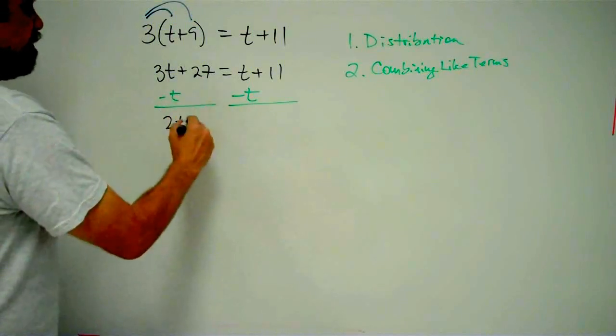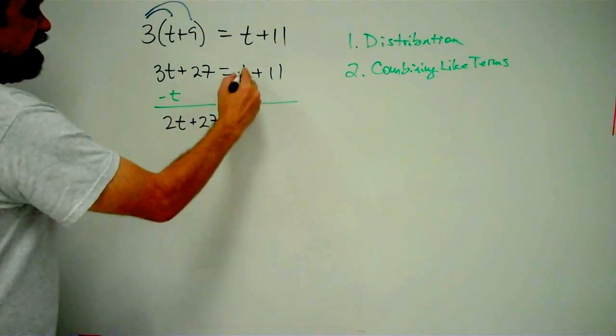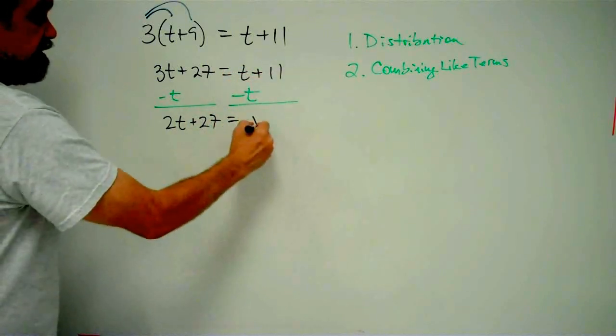So I get 2t. Don't forget you're plus 27. And over here, I get 0 plus 11, which I can just call 11.